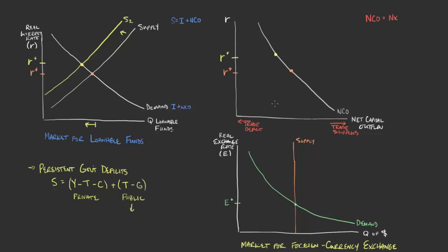In essence, we would be moving towards a trade deficit as well. The persistent government deficits resulting from increased government spending would be pushing us more towards a trade deficit. The supply of funds in the market for foreign currency exchange would then shift to the left — putting all this together, it shifts here to the left. I'll mark it as supply two.